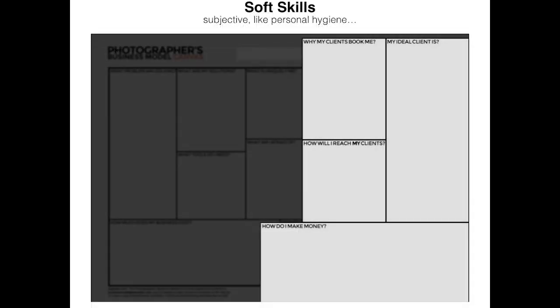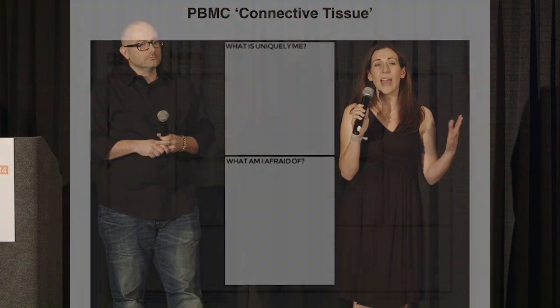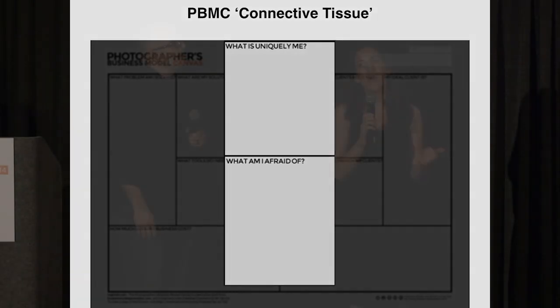On the right, we have the soft skills, which are more subjective and often associated with personality traits. The questions you answer here are: Who is your ideal client? Why do they book you? How do you reach them? And how do you make money? Then we have two categories in the middle — these are the most important, they tie everything else together — and yet you really don't find these in traditional business plans. They are: what is uniquely me, and what am I afraid of?